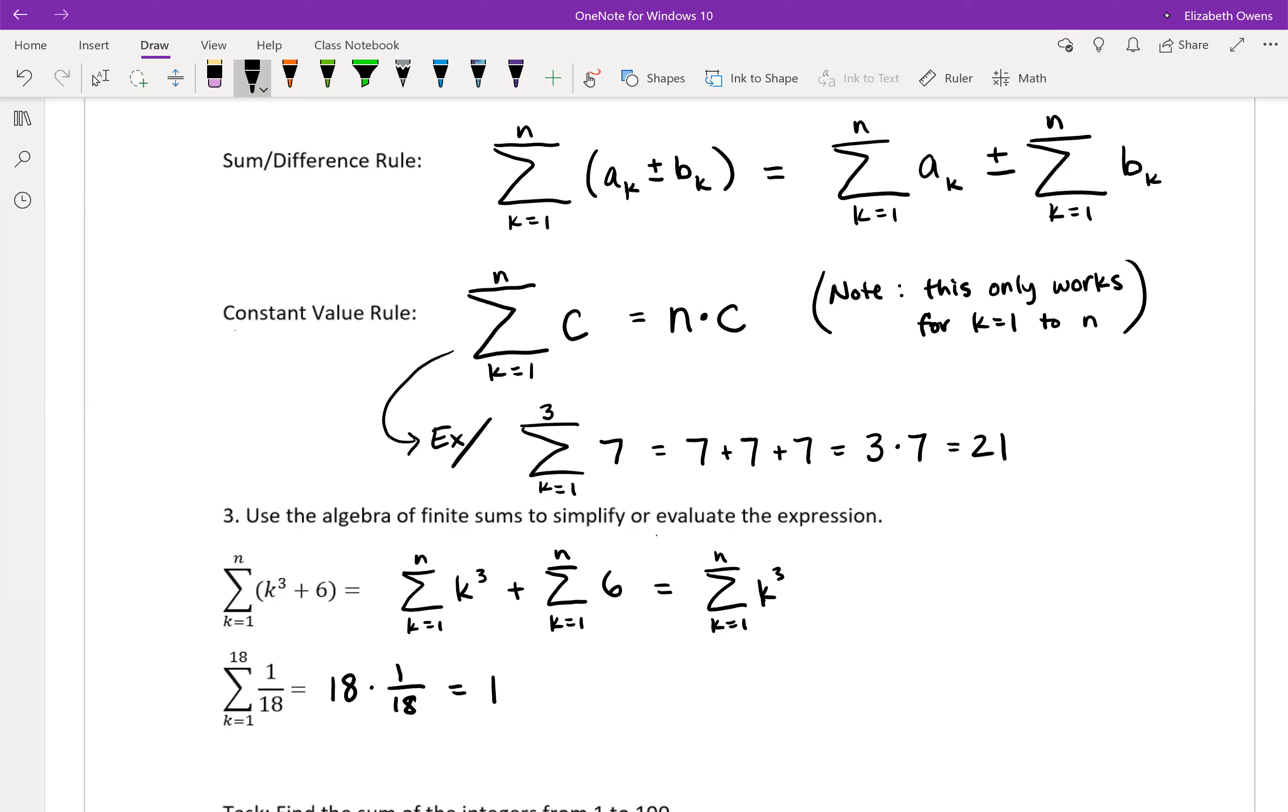But on the second part, constant value rule, notice that since we just have n for that ending index, we'll just have n times 6 or 6n for that second part.